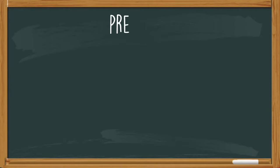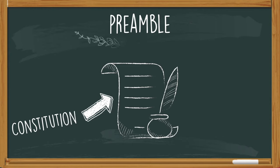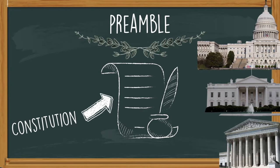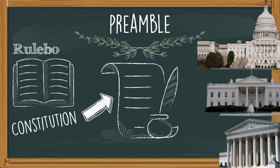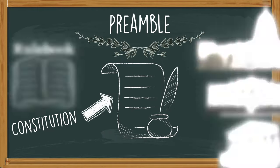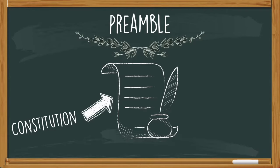The preamble is actually part of the U.S. Constitution. This is the document that creates and establishes the three branches of government: legislative, executive, and judicial. The Constitution acts as a rule book for our government, sort of defining what they can and cannot do. But that's not what we're learning here — what's the preamble?